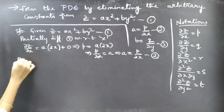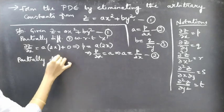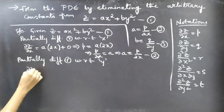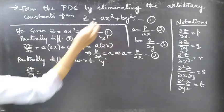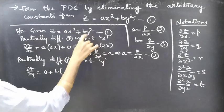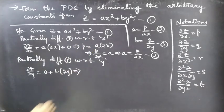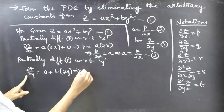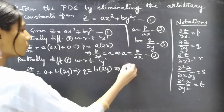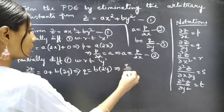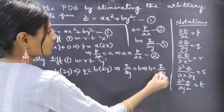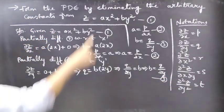Now partially differentiate equation 1 with respect to y. We get ∂z/∂y = 0 (since ax² is constant w.r.t. y) plus b times the partial derivative of y² with respect to y, which is 2y. Since ∂z/∂y = q, replacing it gives q = b·2y. Bringing 2y to the left-hand side, we get b = q/2y. Consider this as equation number 3.